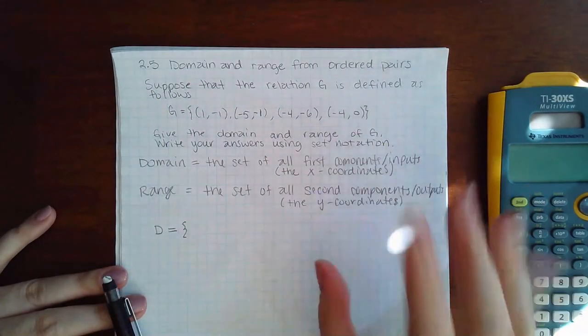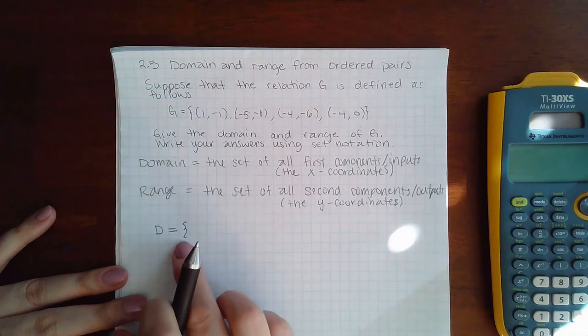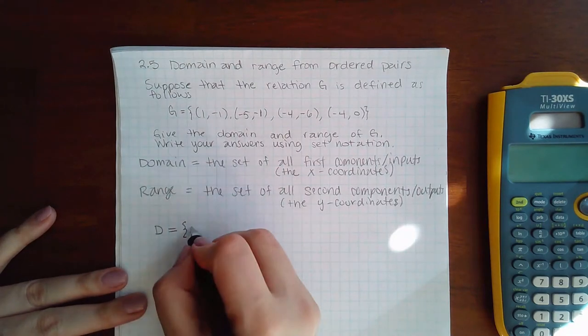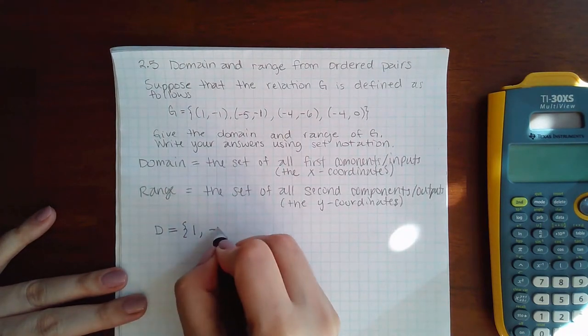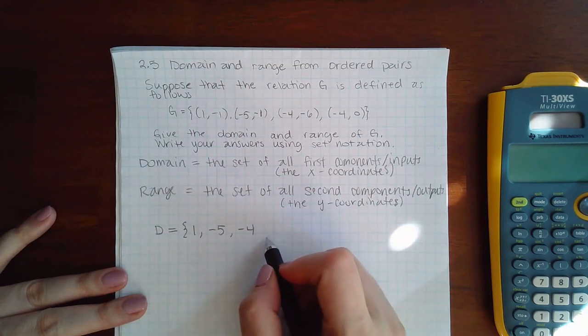The X values are 1, -5, and -4. You do not need to repeat -4 because it's already in the list. Just the distinct X values go inside that list.